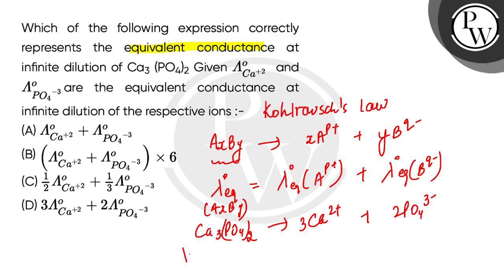The equivalent conductance at infinite dilution, lambda naught Eq of Ca3(PO4)2, what will it be? It will be the sum of equivalent conductance of cation and anion.